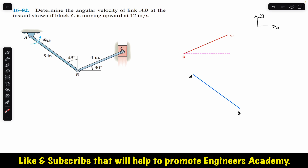We need to find the sense of the velocities at points B and C. For C, the velocity is acting in the upward direction. This is the free body diagram of link BC, and link AB is represented by these two lines. At C, block C is moving upward at 12 inches per second. So V_C equals 12 inches per second. For point B, looking at link AB, point B moves around a circular path about the fixed point A, so its velocity will be tangent to that path.